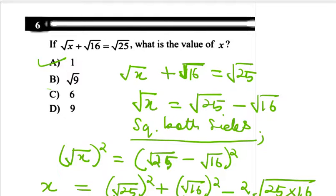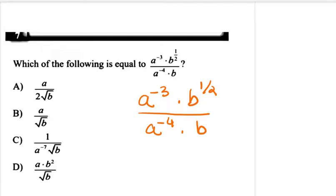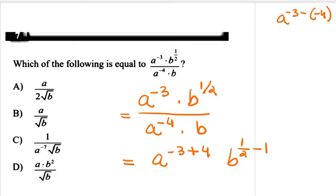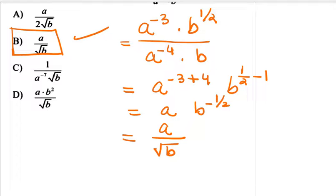Question number 7: A^(-3) · B^(1/2) divided by A^(-4) · B. Solving: A^(-3 - (-4)) · B^(1/2 - 1) = A^1 · B^(-1/2). Since B^(-1/2) goes to the denominator, the result is A / √B. That is option B.